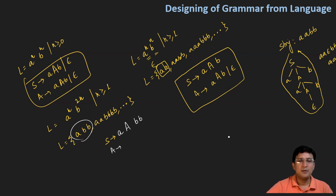So let's say capital A produces small a, capital A and b b. A produces one extra b. So for one a, two b's will come. To ensure this, we have written the grammar in this way.